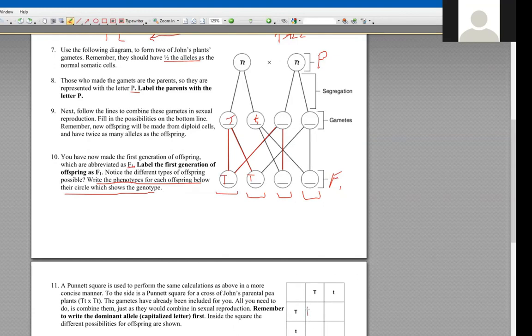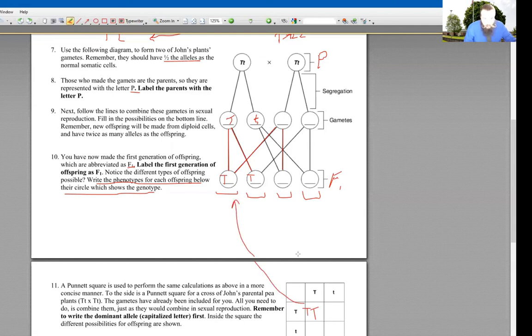And then you'll be able to double-check it because I know you've done Punnett squares before. So, you know, you drop and slide. Big T, big T would be there. Should be the same as there. Does that help?